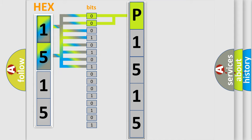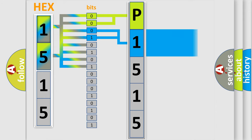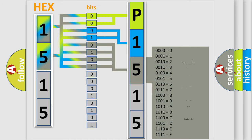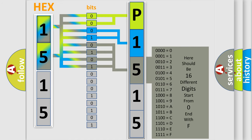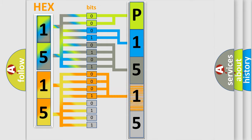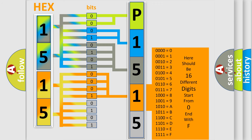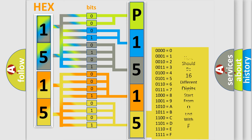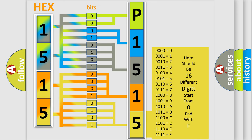The next two bits determine the second character. The last four bits of the first byte define the third character of the code. The second byte is composed of a combination of eight bits. The first four bits determine the fourth character, and the combination of the last four bits defines the fifth character. A single byte conceals 256 possible combinations.